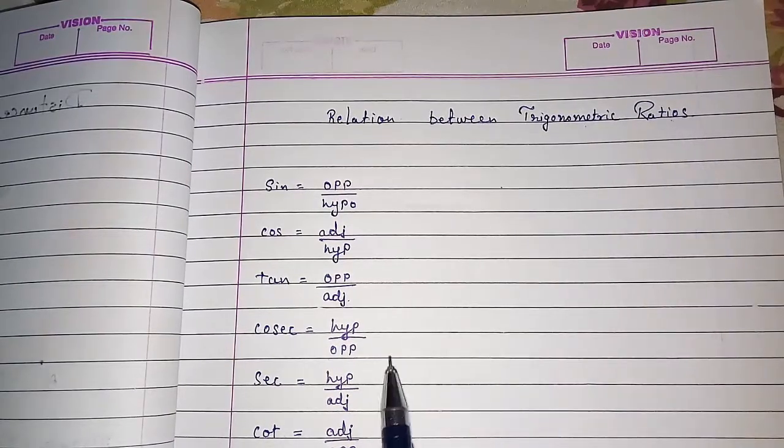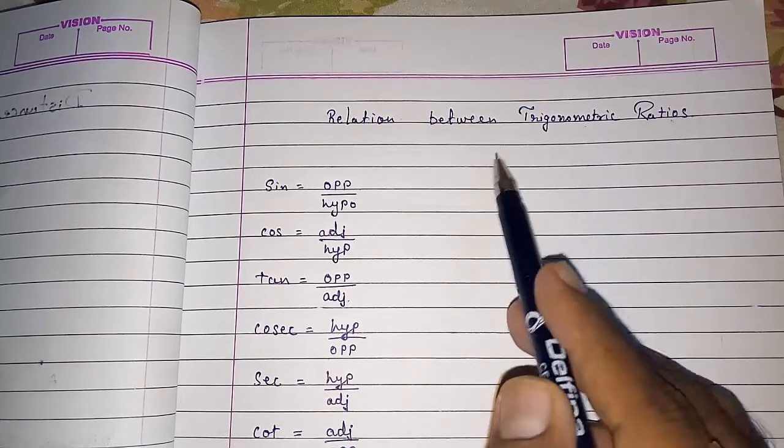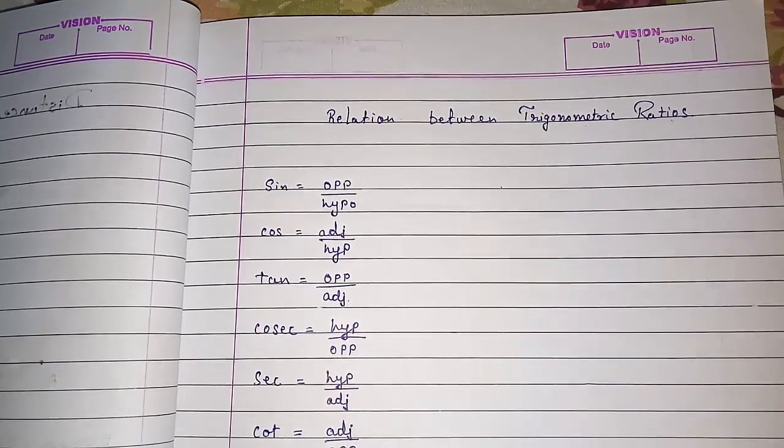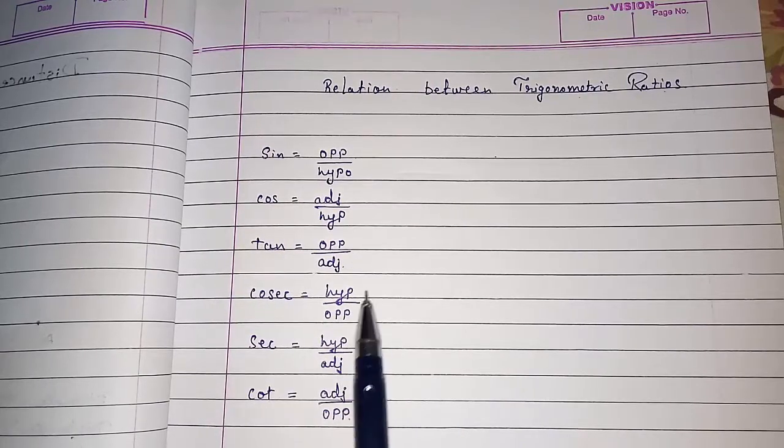In my previous video in introduction of trigonometry I told you that from a right angle triangle we can find out the six ratios by dividing two sides.